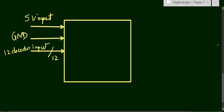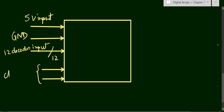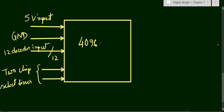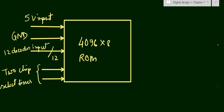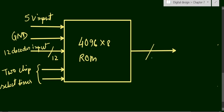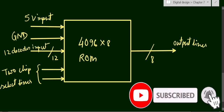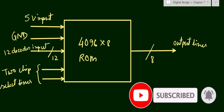We add two chip select lines to the block. This completes the block diagram of the 4096 into 8 ROM unit. On the output side we have 8 output lines, labeled with the array symbol showing 8. This is the full block diagram of the 4096 into 8 ROM unit. Thank you for watching — if you have any questions please put them in the comment section below.